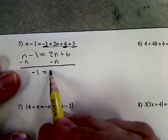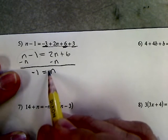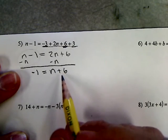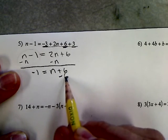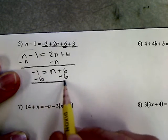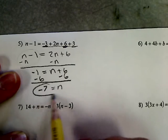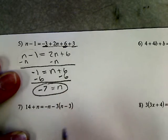2 minus 1 gives me just the n, 1n, we don't write the 1 because we're lazy, plus the 6. And then I'm going to subtract 6 from each side so I can get the n all by himself. And that's n equals negative 7. That's that one.